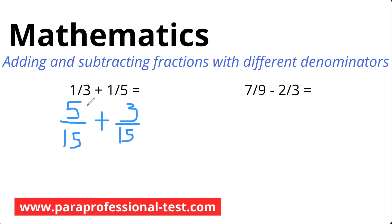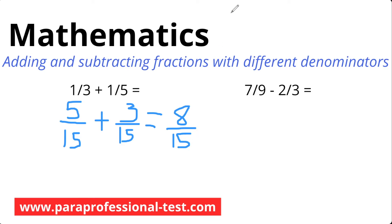Now we're left with 5 over 15 plus 3 over 15. Our denominators are now the same, so we move to step 2: add the top numbers. 5 plus 3 is 8, and we keep the denominators the same, so that's 15. There isn't a number that goes into both 8 and 15 other than 1, so we don't need to simplify. Did you get 8 over 15 as well? Awesome.